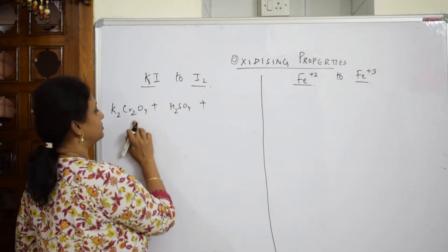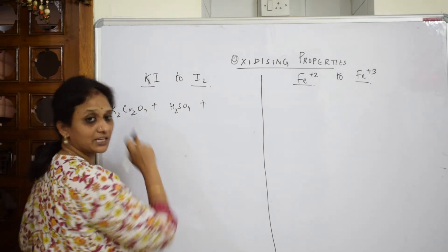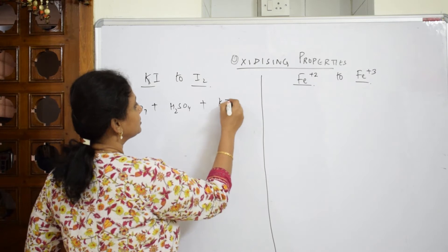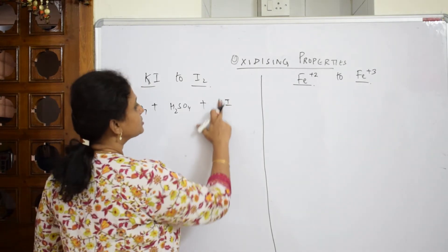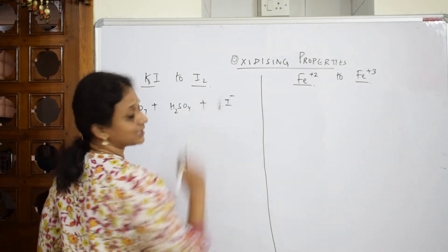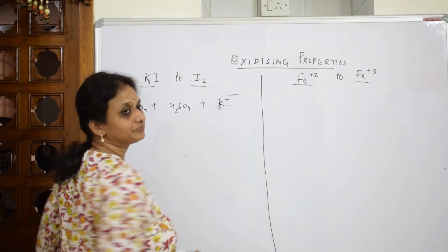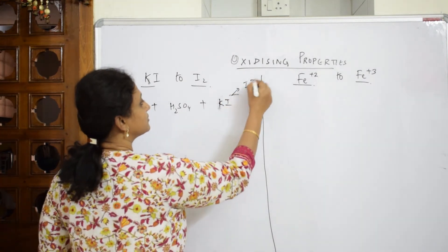Now important, I have to convert or this potassium dichromate has to oxidize potassium iodide to iodine. Now they're going to give you like this or they may just take out this potassium and write like this, not a problem. So now I'm taking potassium iodide.